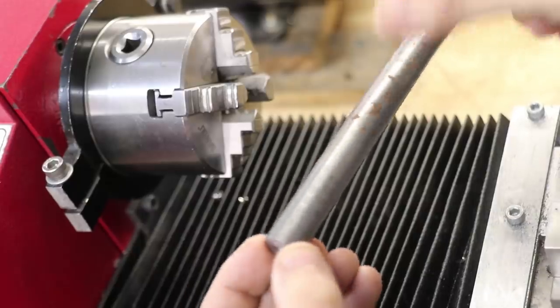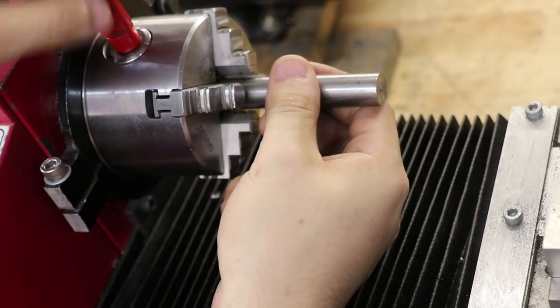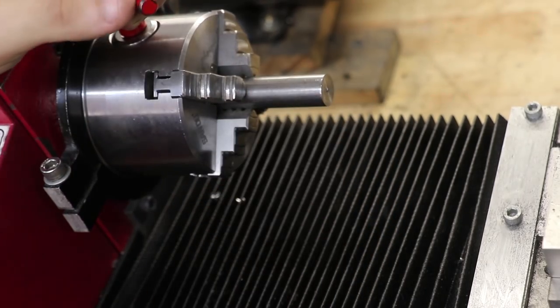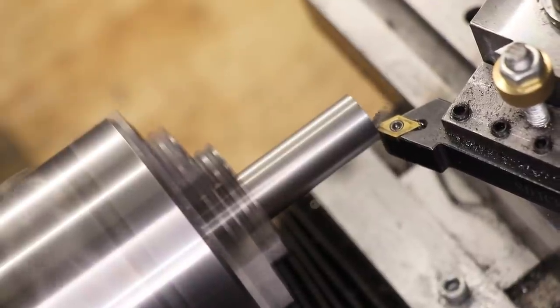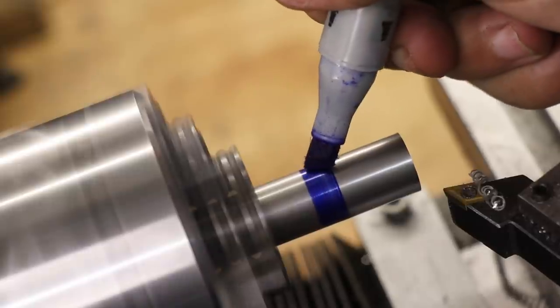Next I'll machine the depthing rod, which I'll make from a piece of 50 millimeter steel. I'll face down the end and then I'll turn it to a half inch in diameter to fit snugly in that reamed hole.